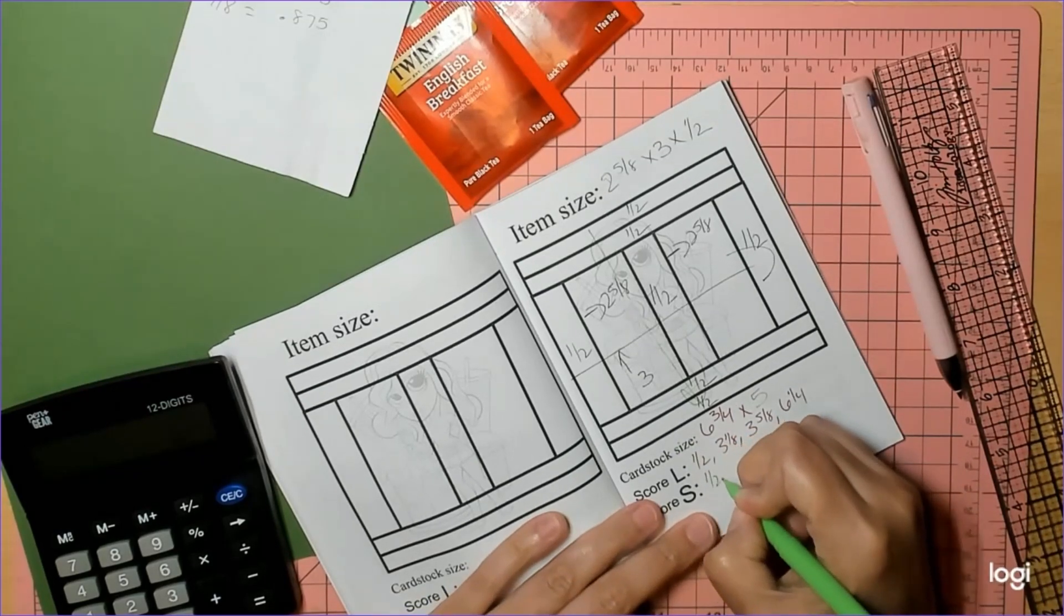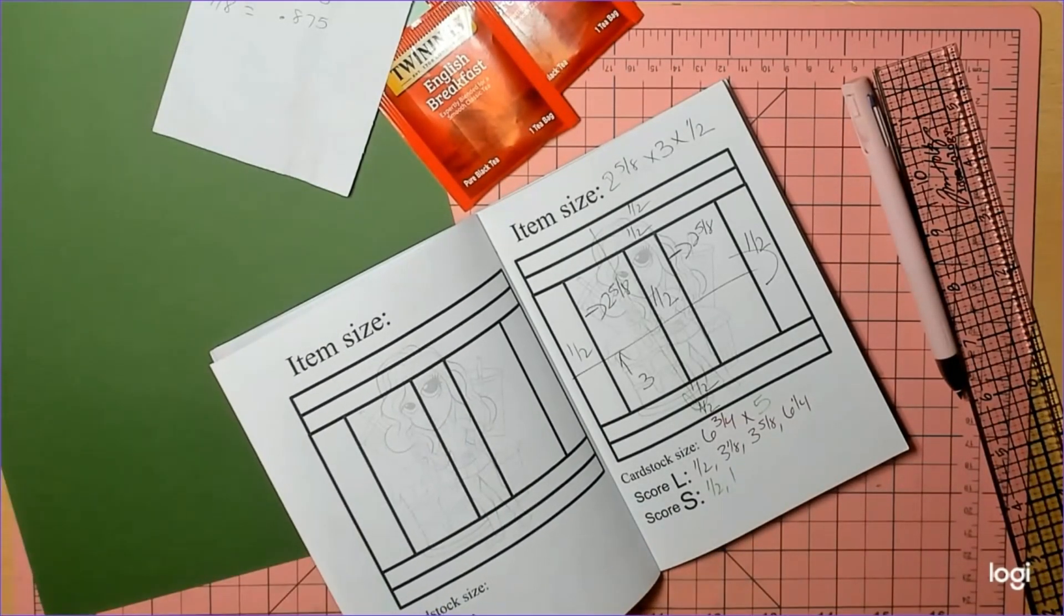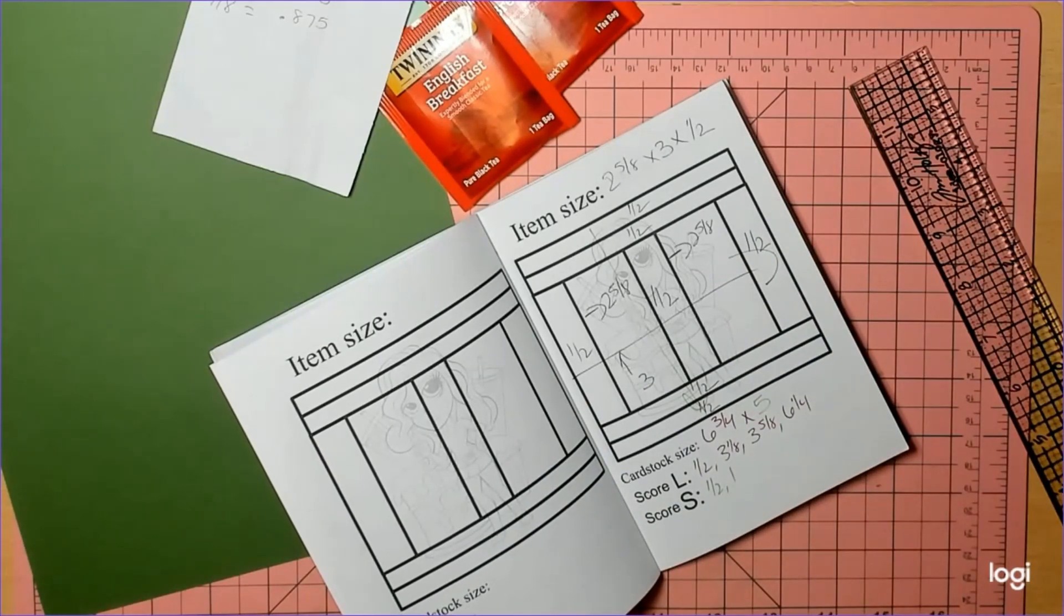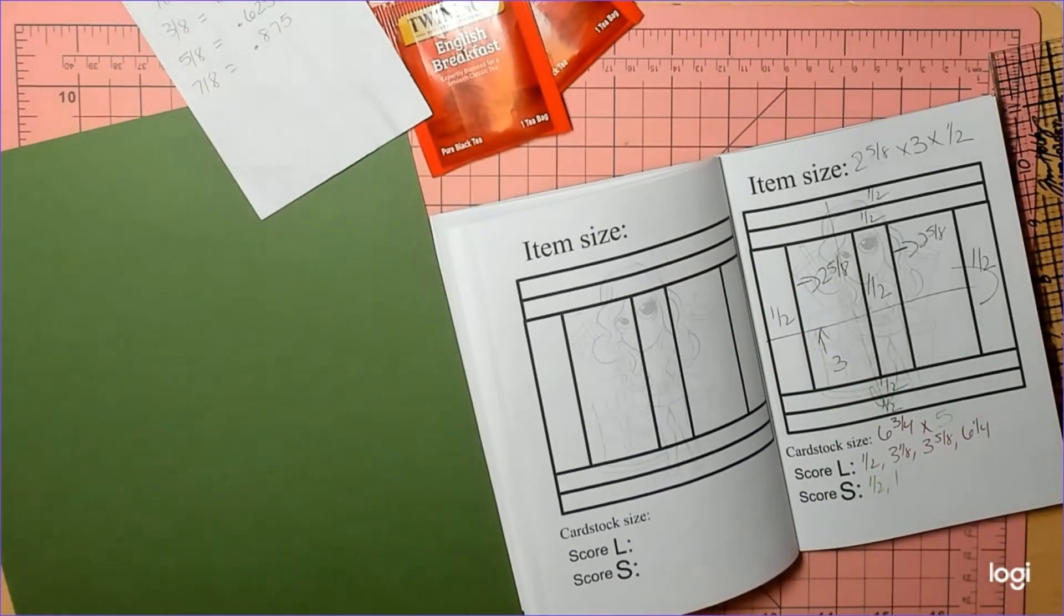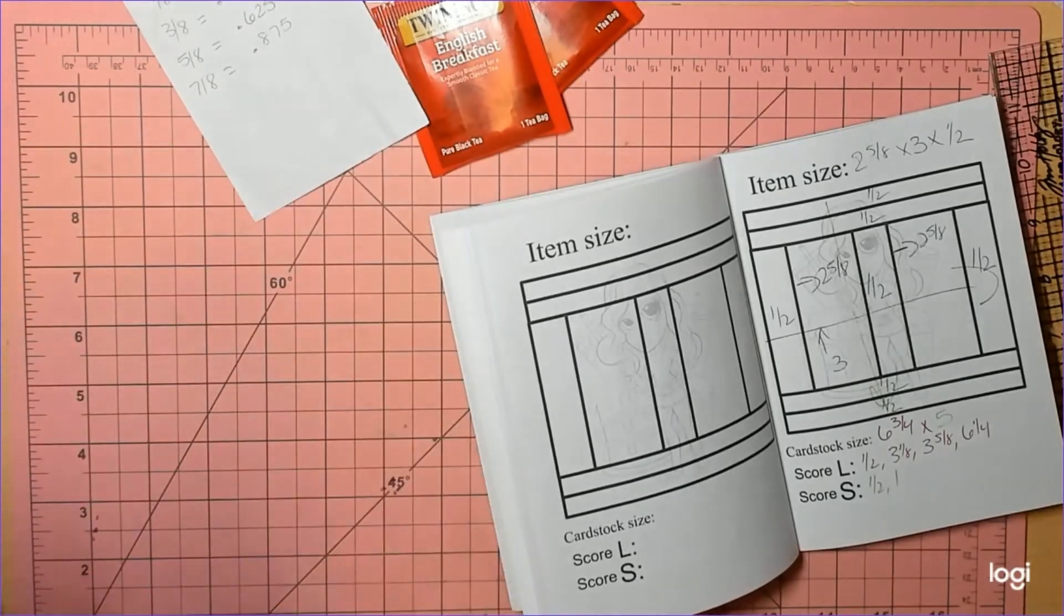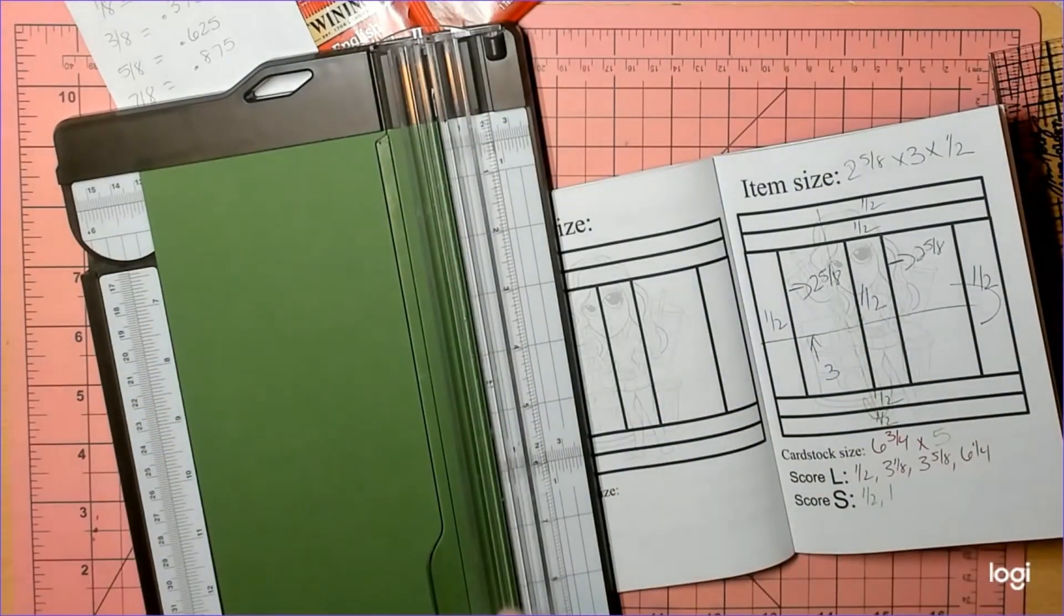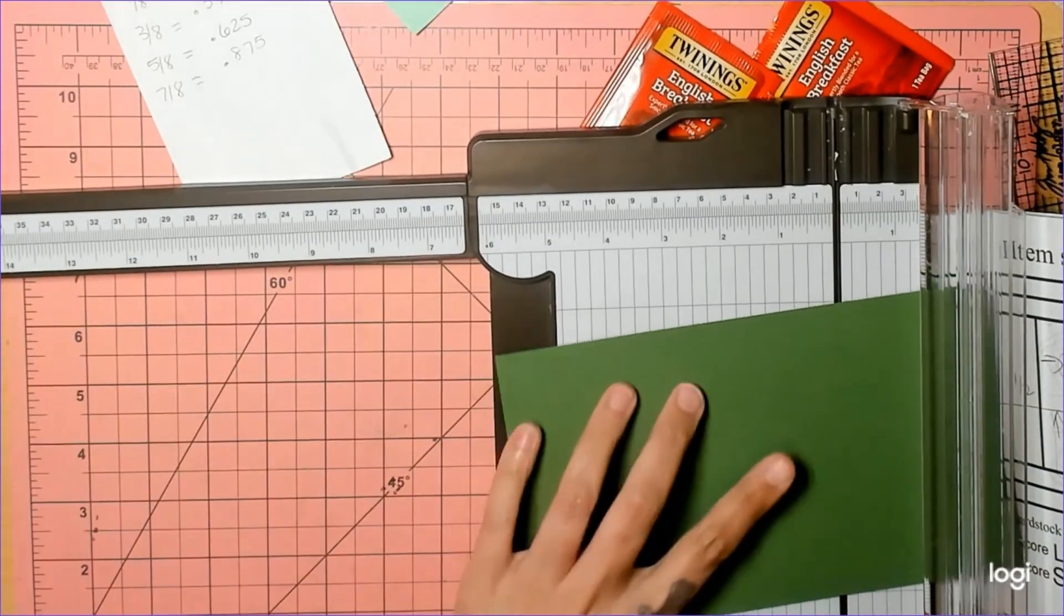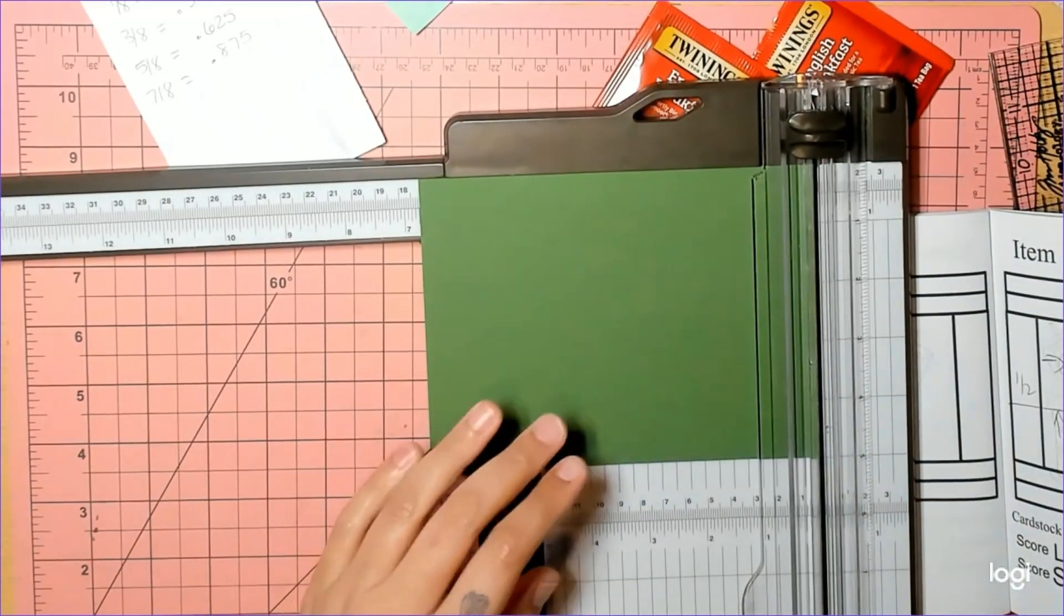On the short side you need half an inch and one on either side. So looks like you can only get one box out of an eight and a half by eleven sheet of paper. Actually no, I'm lying, you get two out of one sheet of paper. I'm going to cut it at five on the long side and then six and three-quarters on the short side.